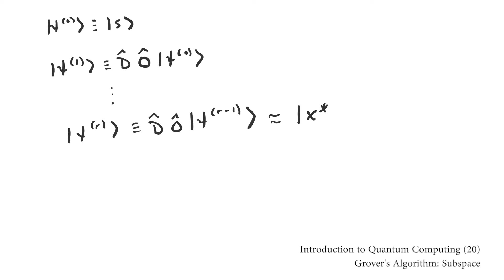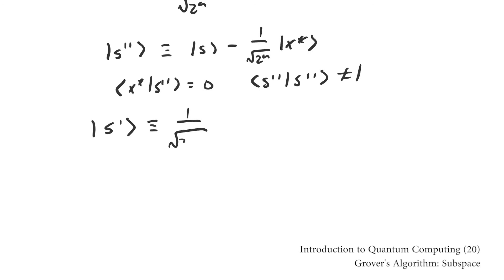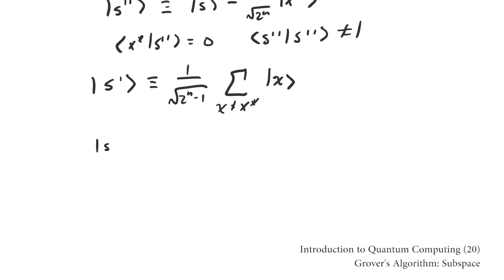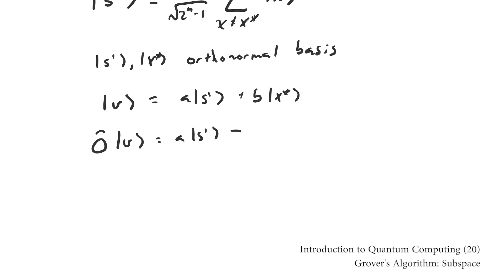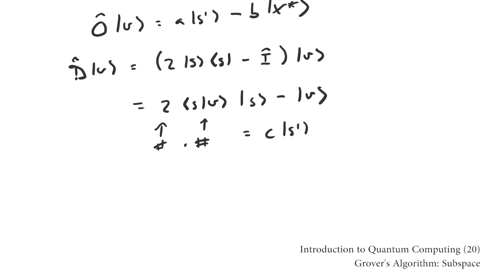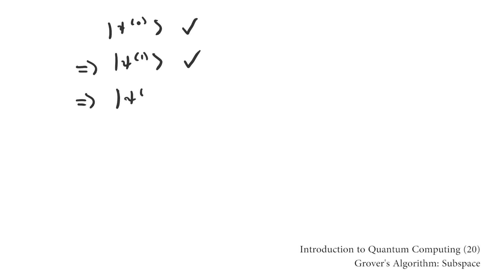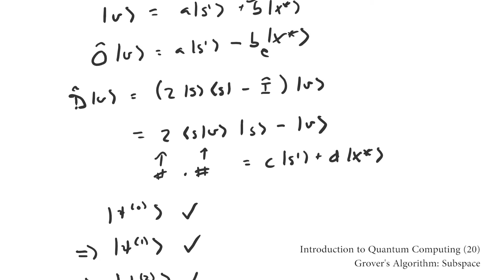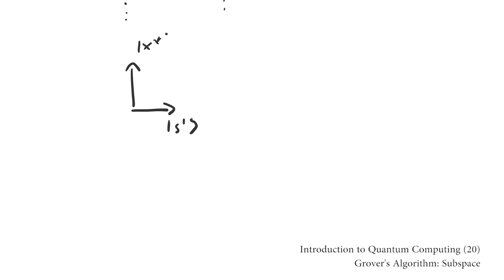After doing this enough times, the system will be approximately x star, so making a measurement will collapse the state to x star with reasonably high probability. One property of the subroutine is that if it's applied to a vector expressible as a linear combination of s and x star, the resulting vector can also be expressed as a linear combination of s and x star. Because s and x star are not orthogonal, I'll introduce another vector s prime. s prime and x star span the same space that s and x star do, but are orthonormal. An arbitrary vector in the s prime–x star subspace stays in that subspace after being acted on by the Oracle and the Grover diffusion operator. Because the uniform superposition is in the s prime–x star subspace, the state vector stays in the subspace throughout the algorithm. Not only that, but the coefficients in front of s prime and x star are real numbers, and a two-dimensional vector space over the real numbers is isomorphic to the plane.